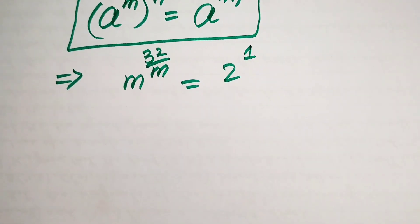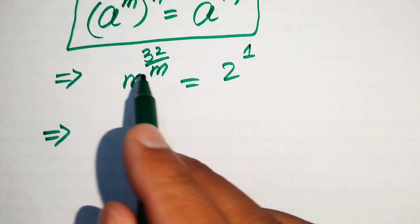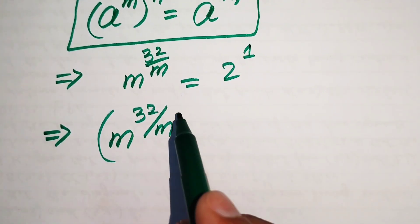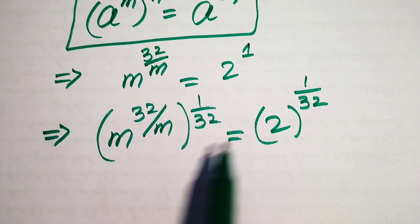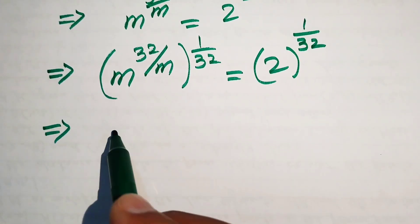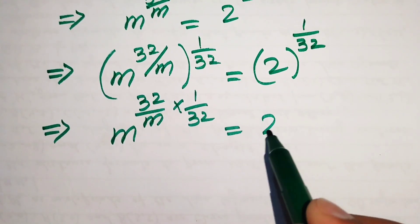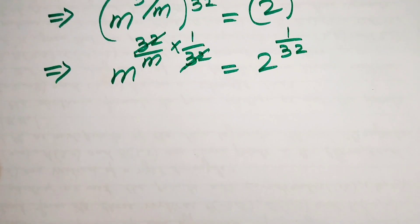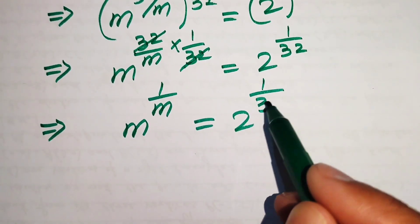Now m is on the left hand side, but our next target is to move 32 to the right hand side. To do that, we take the 32nd root on both sides, written as raising to the power of 1 over 32. Applying the exponential law again, we multiply 32 over m by 1 over 32. The 32s cancel, and we get m to the power of 1 over m equals 2 to the power of 1 over 32.